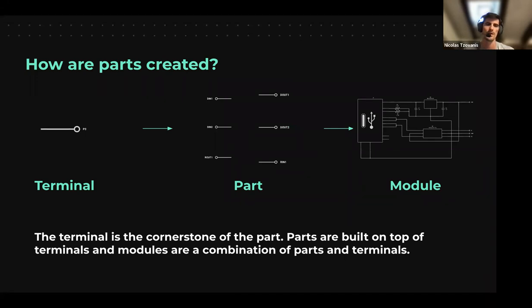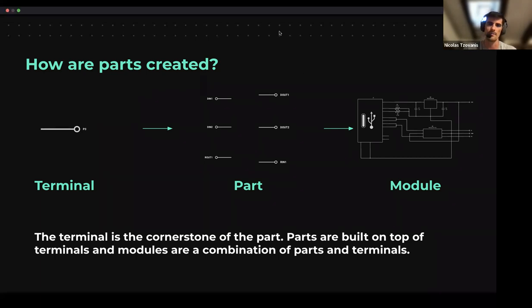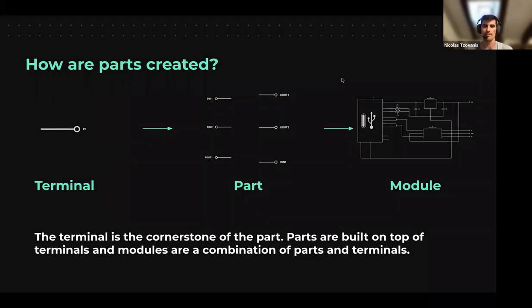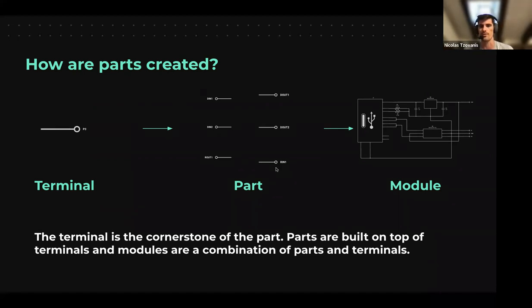In Flux, parts can be ever more complex within the same umbrella. Everything starts with a terminal — think of it as a pad — which helps the part interact with whoever is using it. The simplest part would be a bunch of terminals with a footprint. When you import this part in your design, you'll just see a few terminals, and when you go to the PCB, you'll see the footprint for that specific part.